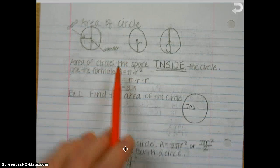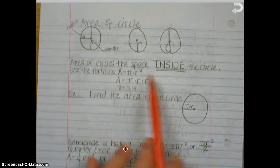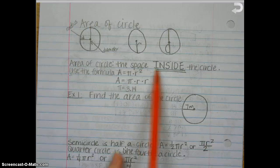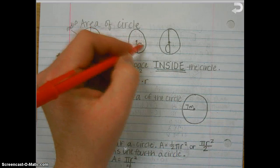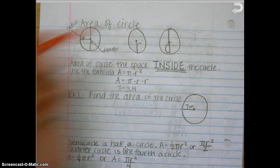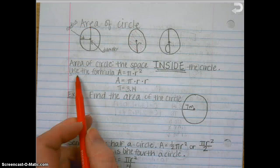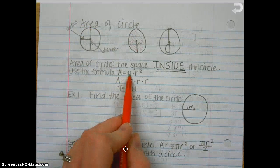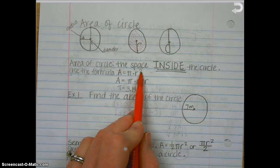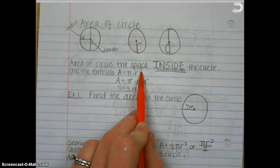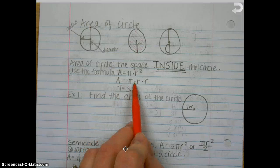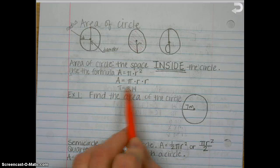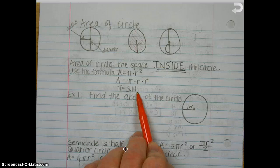So the area of the circle is the space inside the circle — basically everything inside of the circle. You're going to use the formula: area is equal to pi times the radius squared. The radius squared is like the radius times the radius, so: area is equal to pi times the radius times the radius. Remember, pi is going to be 3.14.